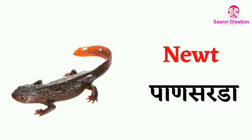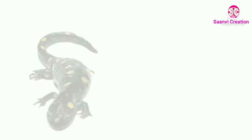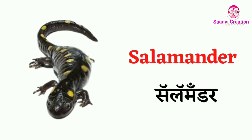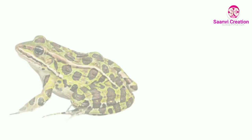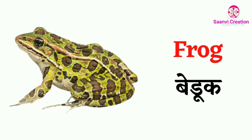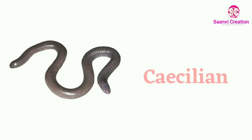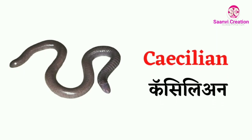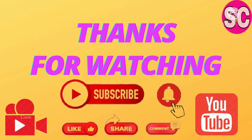Newt (N-E-W-T) — newt means 'Paan Sarada'. Salamander (S-A-L-A-M-A-N-D-E-R) — salamander means 'Salamander'. Frog — frog means 'Beduk'. Caecilian (C-A-E-C-I-L-I-A-N) — caecilian means 'Caecilian'.